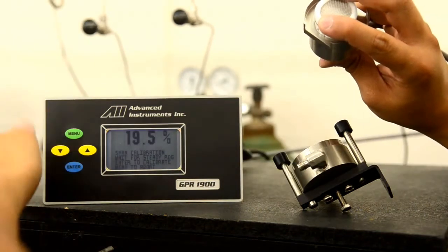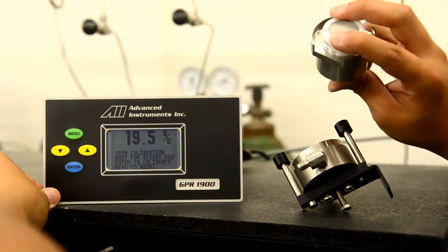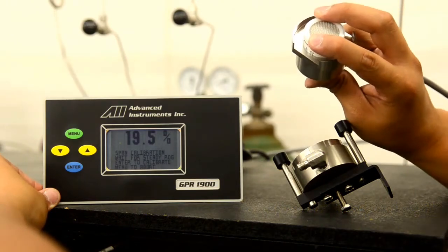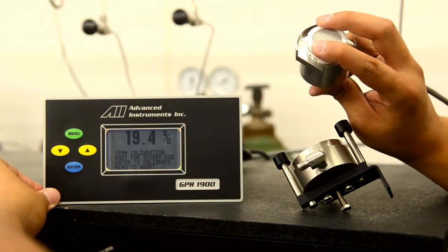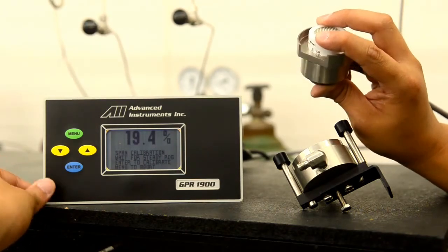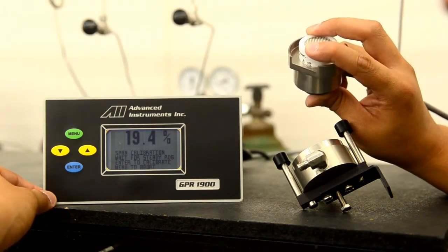As you can see here, the sensor is responding to ambient air. We want to firmly hold the sensor in place for a few minutes to ensure that the reading is stable. Once the reading has stabilized, say 19.4%, we are ready to hit enter to calibrate the sensor.